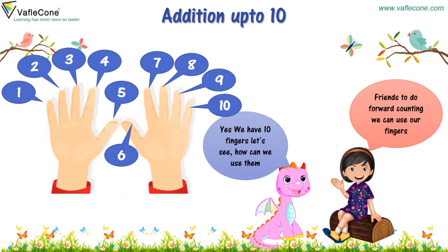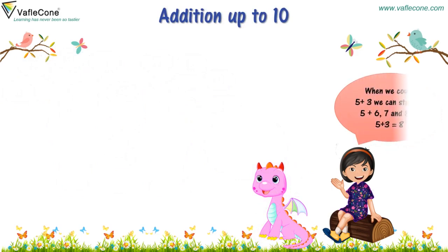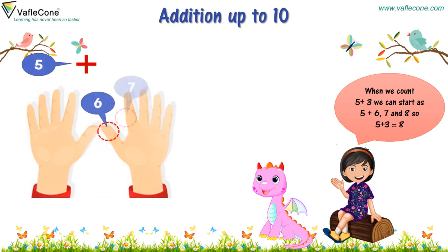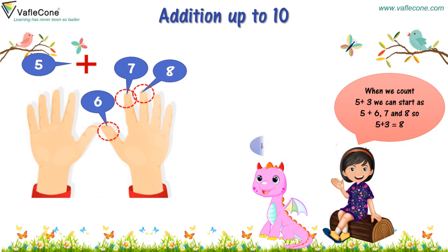Let's see how we can use them. When we count 5 plus 3, we can start at 5, then count 6, 7, and 8. So, 5 plus 3 is equal to 8.